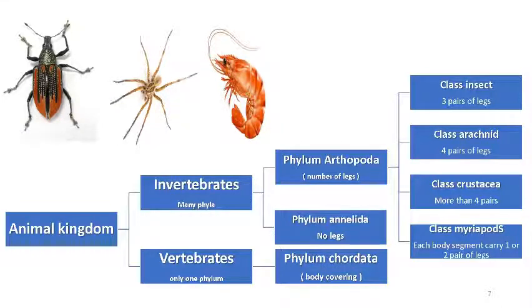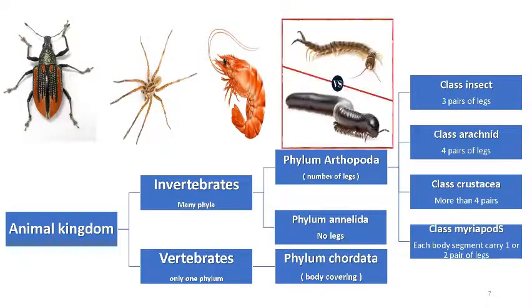Class Myriapoda: each segment of their body has one or two pairs of jointed legs.